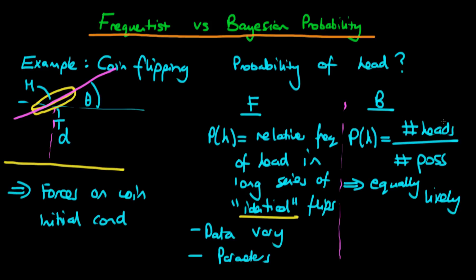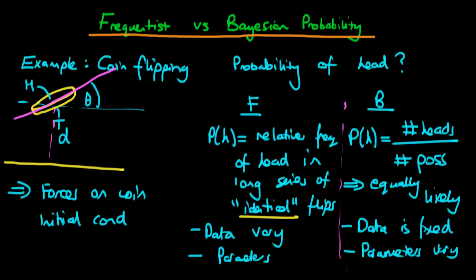The total number of possibilities represents the total number of initial conditions, and the number of heads represents the total number of heads that come out across all of the different possibilities. In this example, we assume the data is fixed — meaning if we have a certain initial condition, the value we get on the coin is always exactly the same. The reason we get some heads and some tails is because the parameters vary. So the probability here doesn't represent a long-run frequency; it represents a kind of uncertainty — in this example, uncertainty over the initial conditions. Because we don't know the initial conditions exactly, we have underlying uncertainty as to what value is going to come up on the coin.